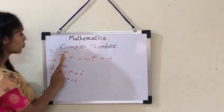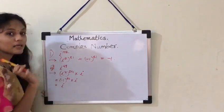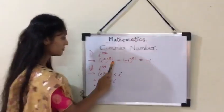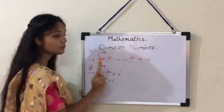First example is i raised to 102. i means imaginary. So, i square raised to 51 is equal to i square's value is minus 1.